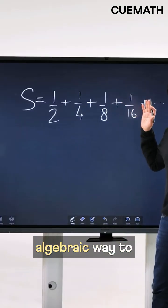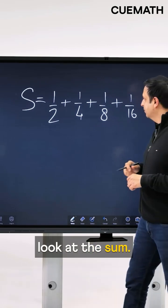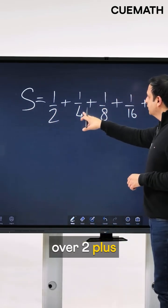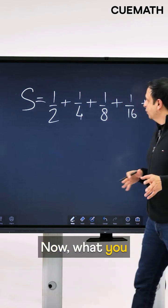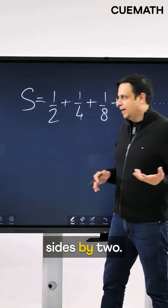If you're still not convinced, now here's an algebraic way to look at the sum. So you have s as 1 over 2 plus 1 over 4 plus 1 over 8 and so on. Now what you do is just multiply both sides by 2.